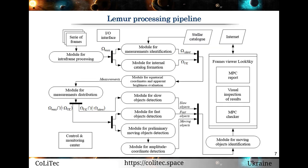The processing pipeline of the Lemur software is presented on this slide. After intra-frame processing, the classification of measurements is performed. The different classes contain measurements of objects with null, near zero, normal, and very fast apparent motion. Data mining and processing of these sets of objects is performed in parallel, which reduces execution time. During the intra-frame processing stage, there is an identification process with astrometrical and astronomical catalogs, called astrometric reduction.